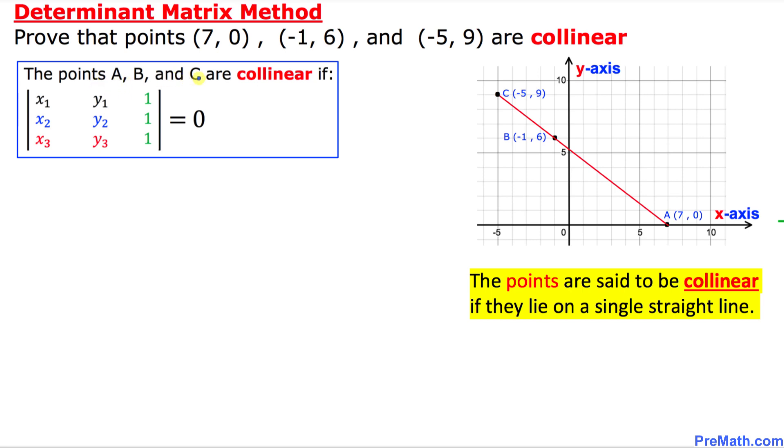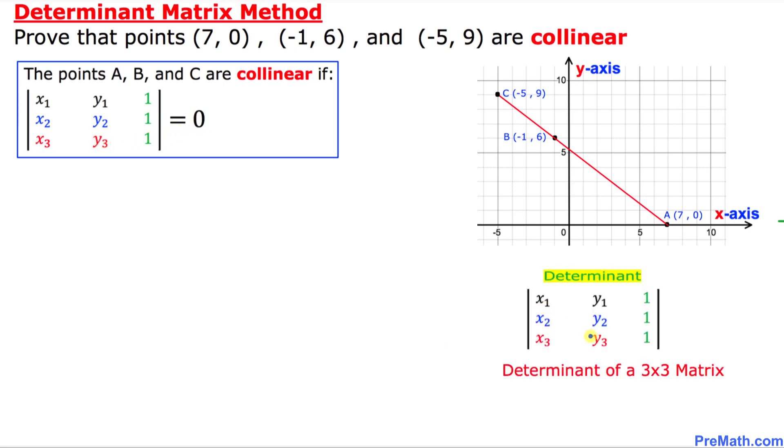The points A, B, C are collinear if the determinant of this 3x3 matrix is equal to 0. So once again, just keep in your mind that this 3x3 box is called the determinant of a 3x3 matrix.